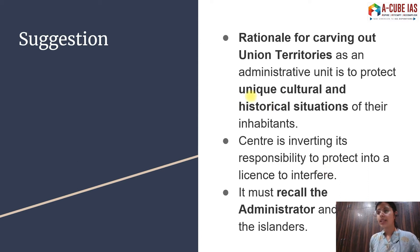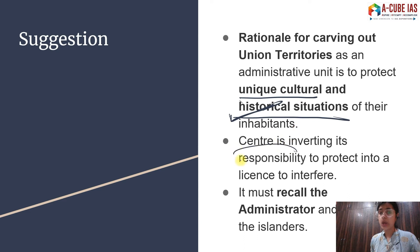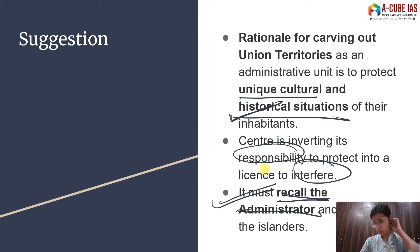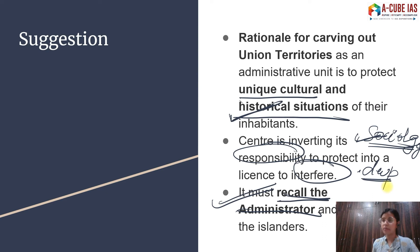The article goes ahead with suggestions. It says the reason the Union Territory was created was to protect the unique culture and historical situation of the inhabitants, and by these acts we are doing exactly the opposite — we are interfering. The conclusion calls for recalling the administration. You can use this as a sociology example of how tribals resist change and in your idea of development — how development is woven around people and not people around development.